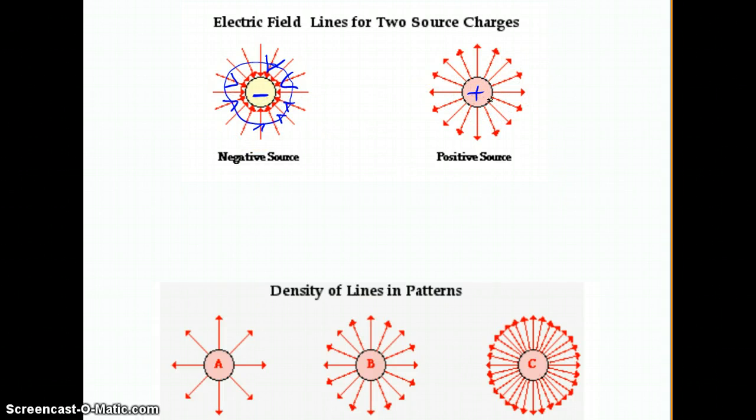Over here on the right, I can tell it's a positive charge, because the arrows are all facing away. And again, that's because if this was a positive test charge, Q0, it would get pushed away from the center of the charge.